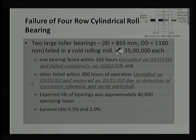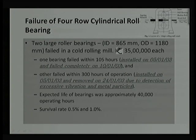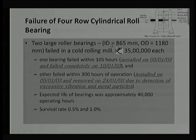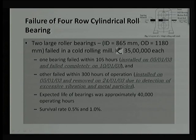I will start by discussing a case study we did for an industry related to a rolling mill stand. The rolling mill reduces the thickness of a sheet — for example, from 10 mm down to 3 or 4 mm. This requires rollers supported on bearings for perfect alignment. We used two large roller bearings: their inner diameter was 865 mm and outer dimension was 1.18 meters — quite large — and both bearings failed.